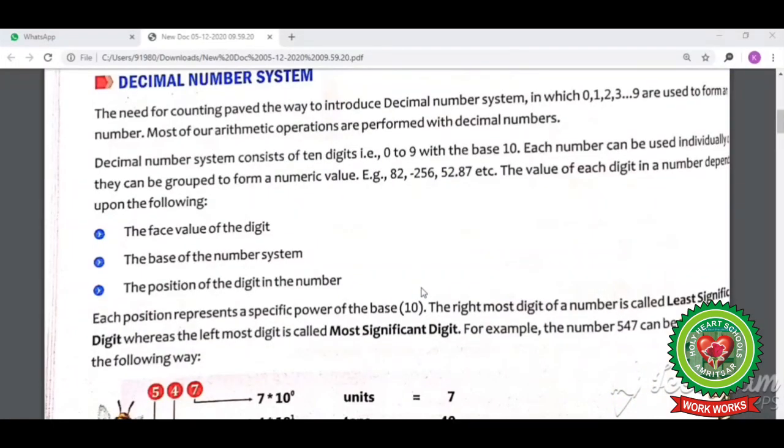Decimal number system contains 10 digits. Each number can be used individually, but they can be grouped to form a numeric value. The value of each digit in a number depends upon the face value of the digit, the base value of the number system, and the position of the digit in the number. Each position represents a specific power of the base. The rightmost digit of a number is called the least significant digit, whereas the leftmost digit is called the most significant digit.